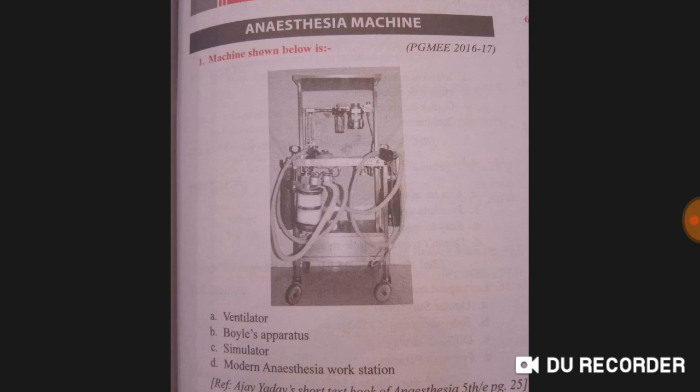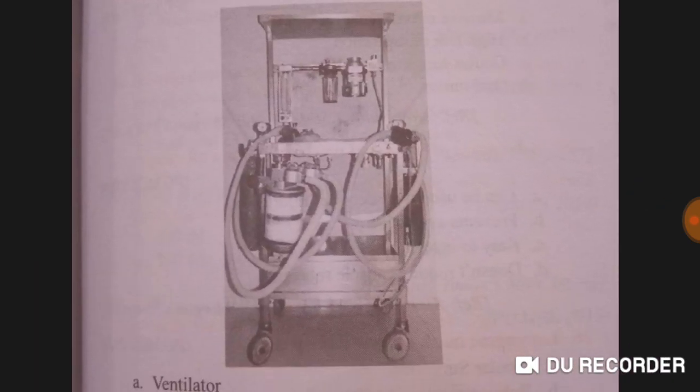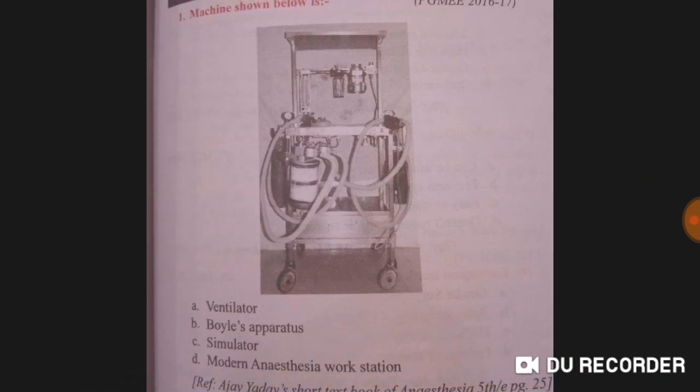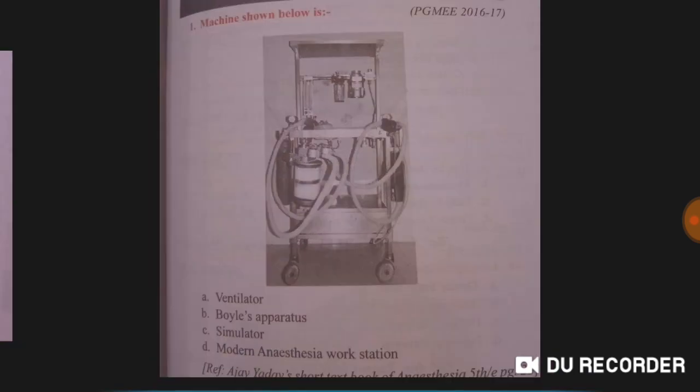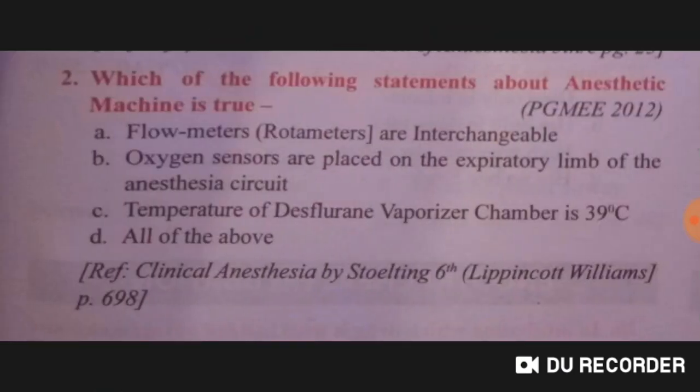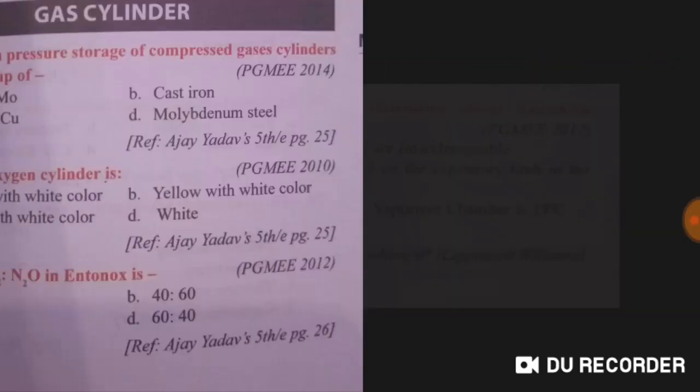The machine shown below — see this machine, it's visible — is a Boyle's apparatus. Now, which of the following statements about the anesthetic machine is true? The temperature of the desflurane vaporizer chamber is 39 degrees Celsius. The answer is A.